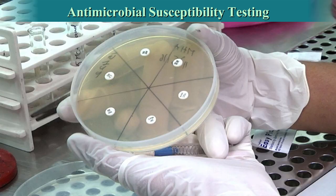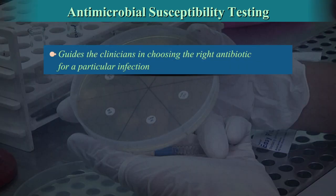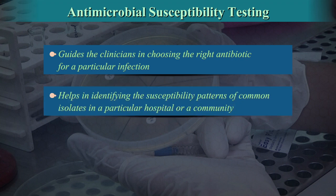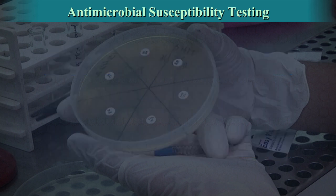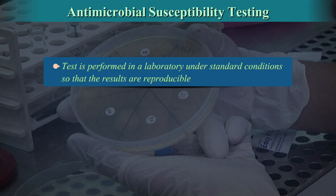Antimicrobial Susceptibility Testing guides clinicians in choosing the right antibiotic for a particular infection. It also helps in identifying the susceptibility patterns of common isolates in a particular hospital or community. This data can help in choosing the right empirical treatment for critically ill patients even before culture results are obtained from the microbiology laboratory. This test is performed under standard conditions so that the results are reproducible.